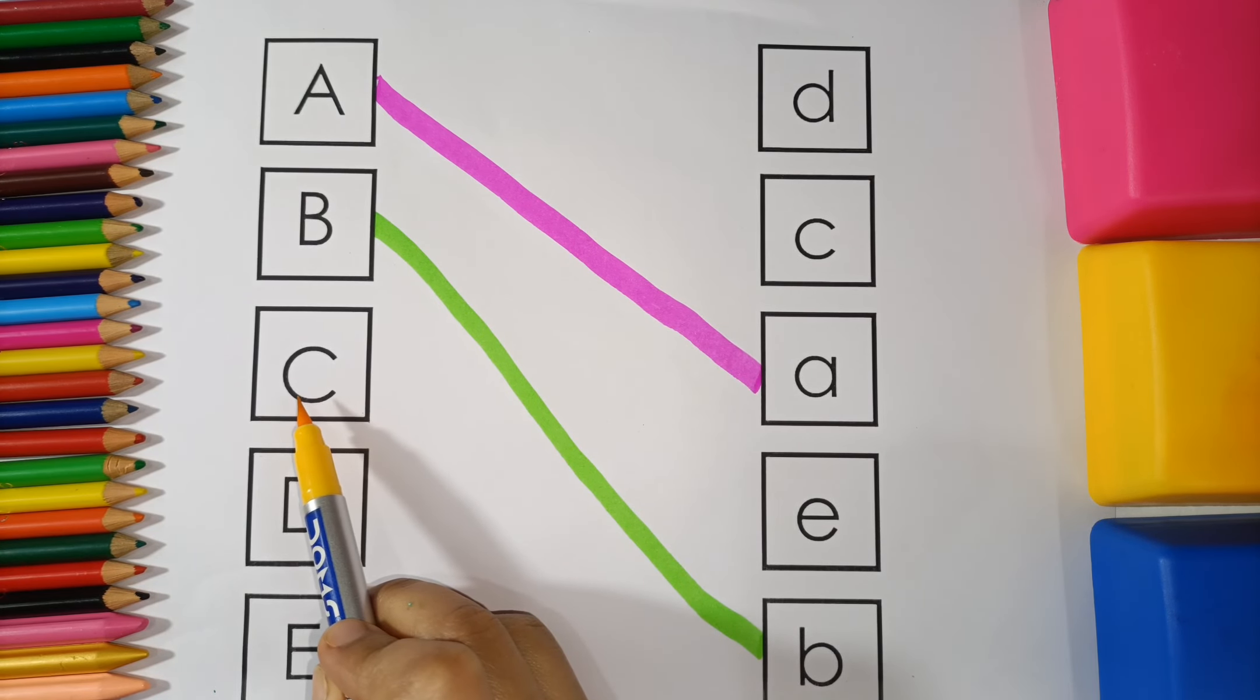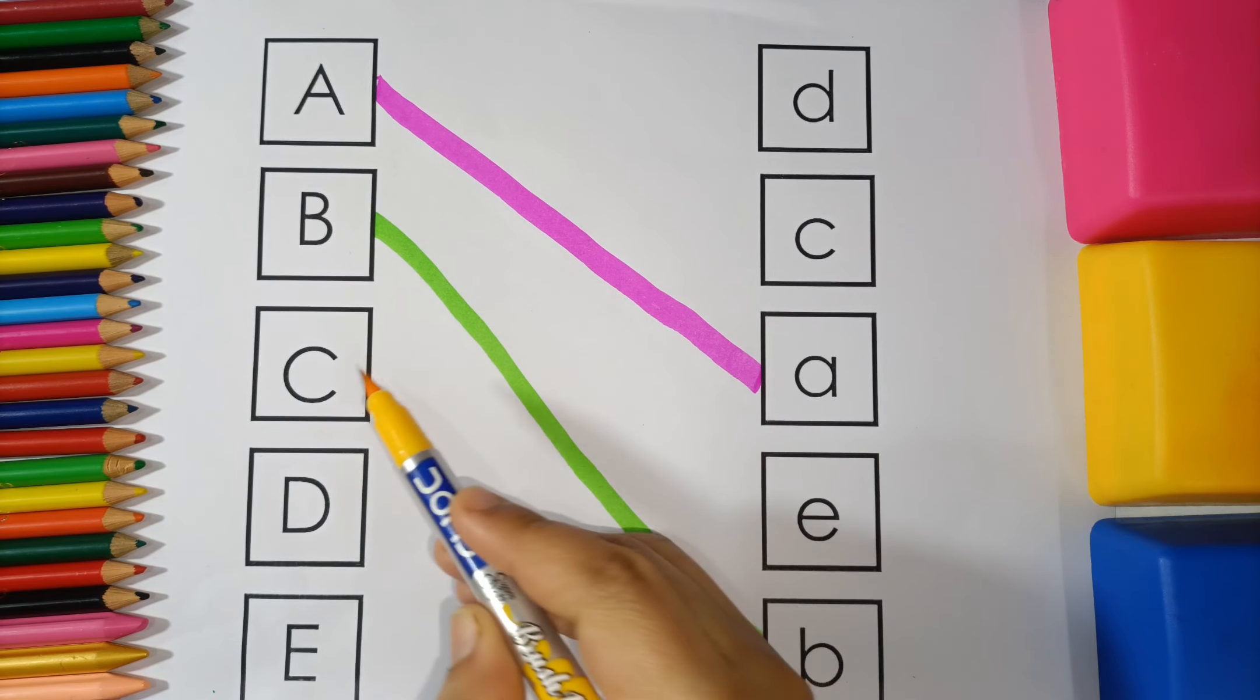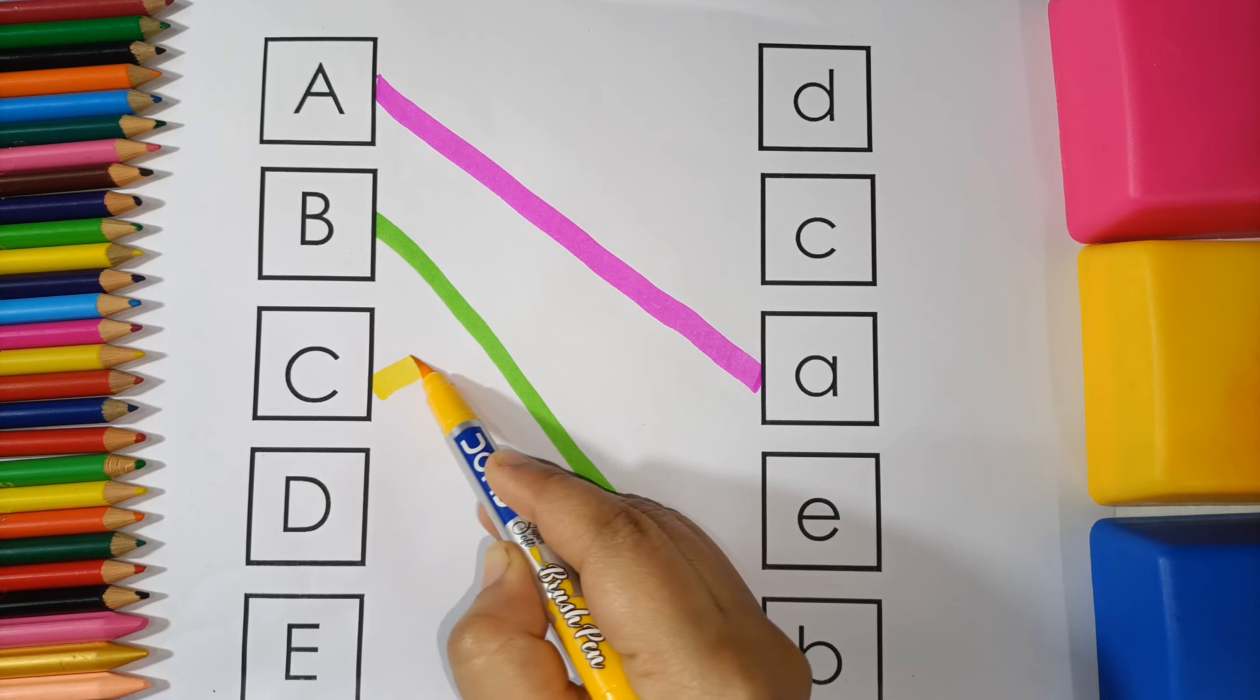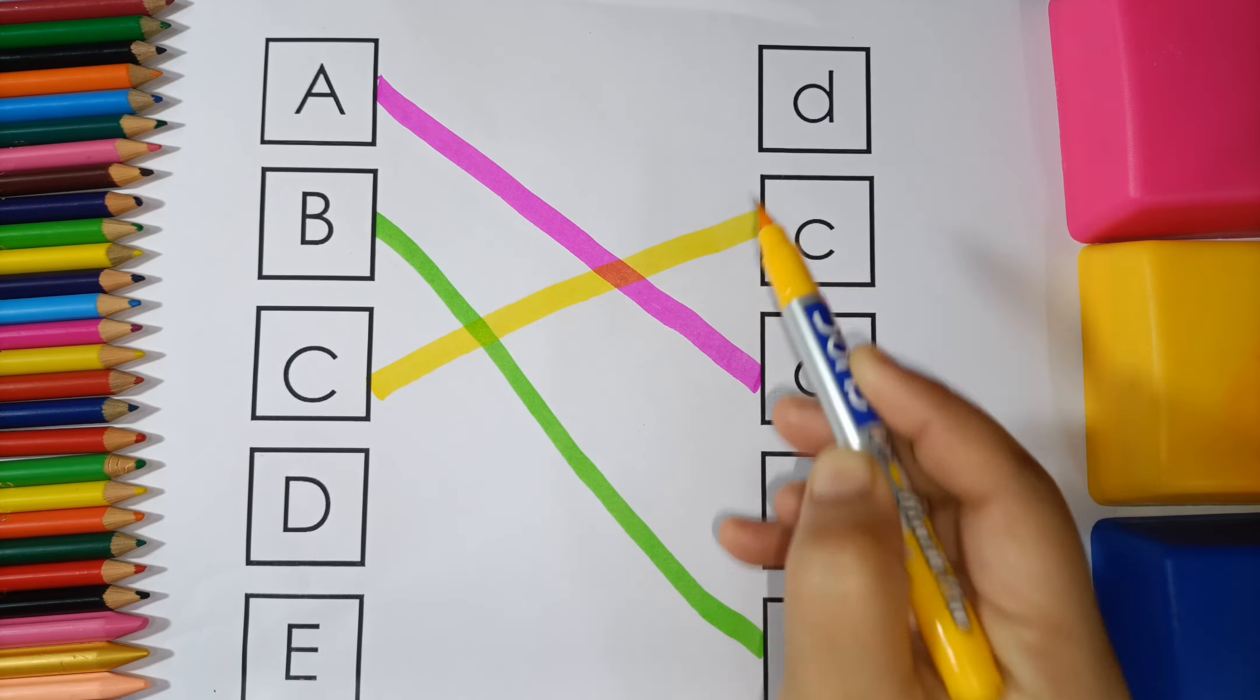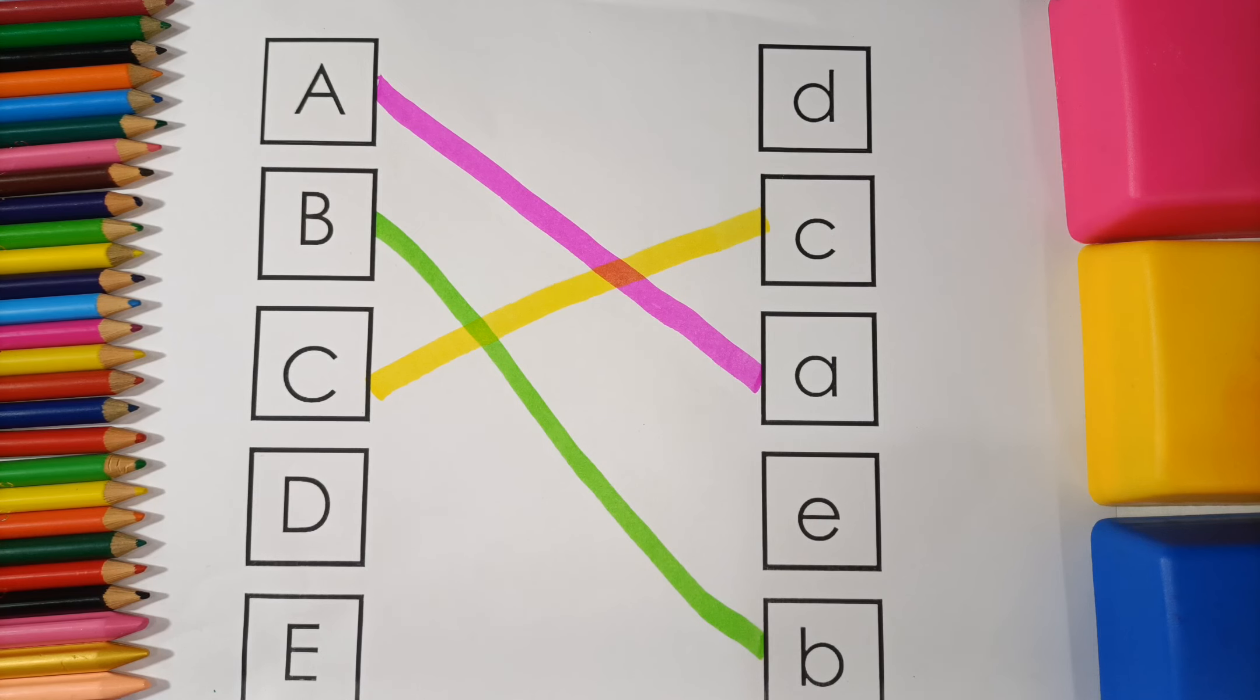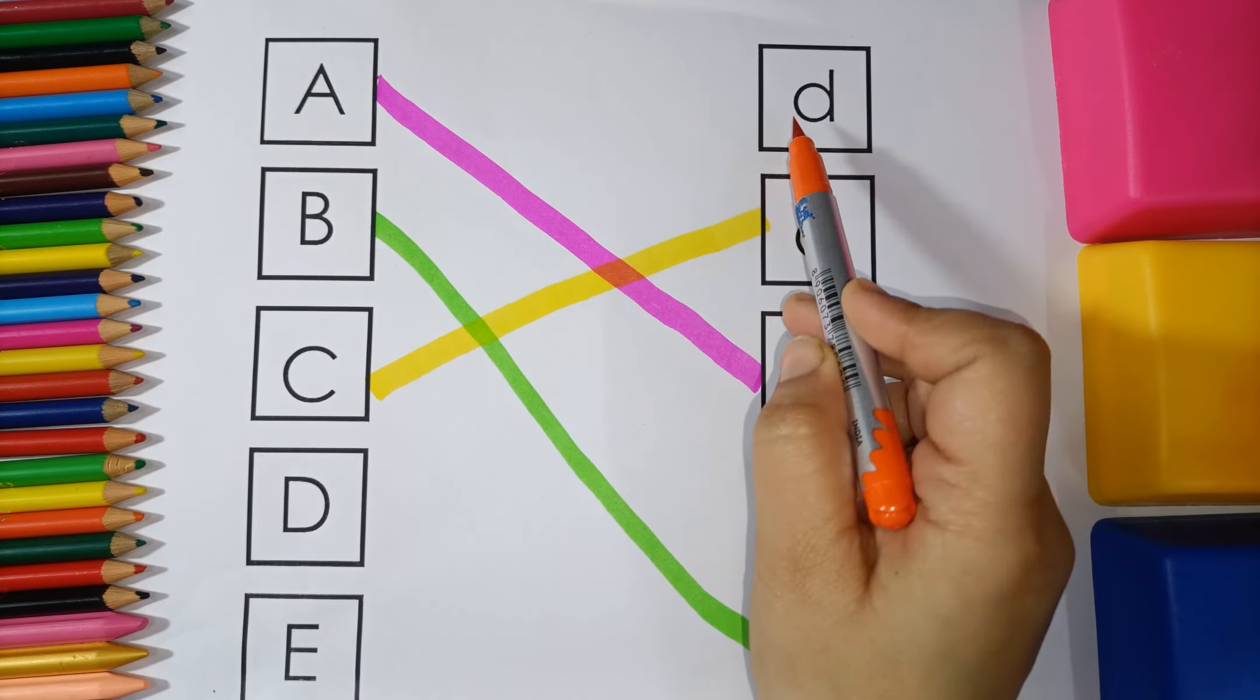C, C for cat. Capital letter D to small letter d. D, D for dog.